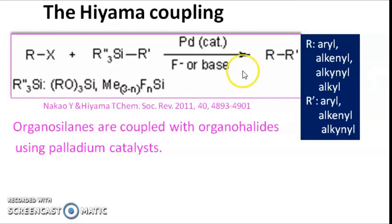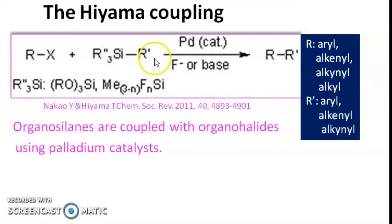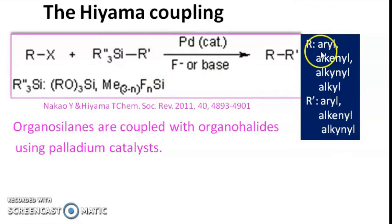The organic moieties usually used for the organohalide are aryl, alkyl, alkenyl, and alkynyl groups, and the organic moiety used for the organometallic compound is similarly aryl, alkyl, alkenyl, and alkynyl. It is these two fragments which are brought together.